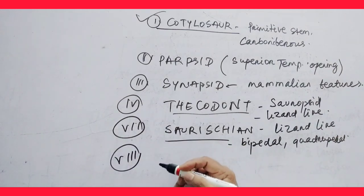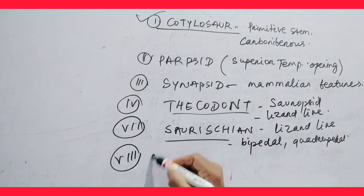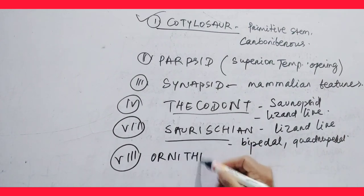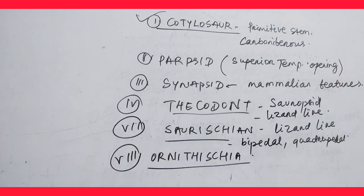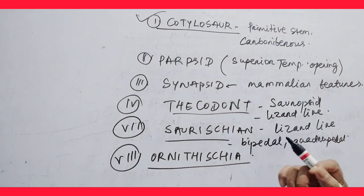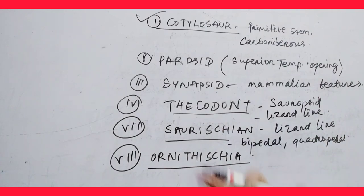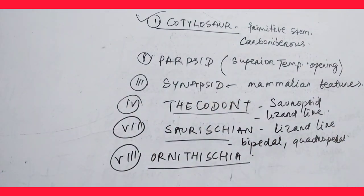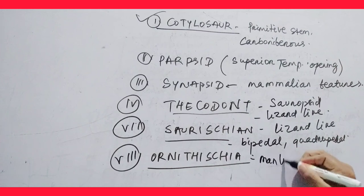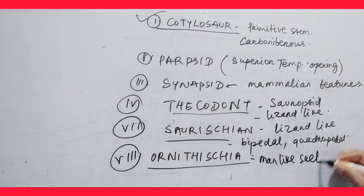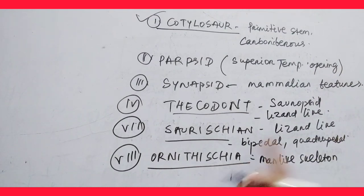Next are Ornithischians — bird-like animals. These are bird-like, where the pelvic girdle is larger, having ilium, ischium, and pubis — like a man-like skeleton. Ornithischians are herbivorous or carnivorous.